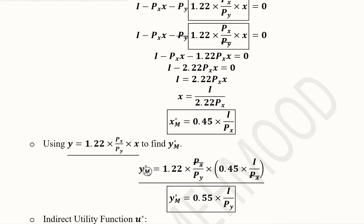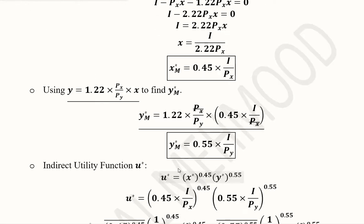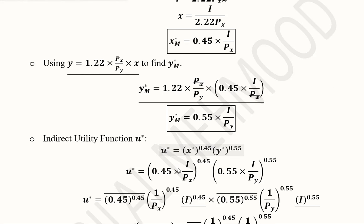The value of Y in the Marshallian version is found by substituting the value of X into the bracket. After this substitution and simplification, we get the Marshallian demand function for good Y, denoted Y asterisk M.